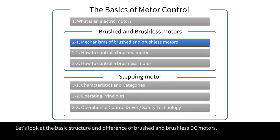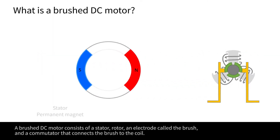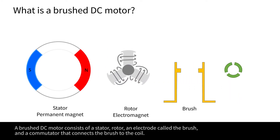Let's look at the basic structure and difference of brushed and brushless DC motors. A brushed DC motor consists of a stator, rotor, an electrode called the brush, and a commutator that connects the brush to the coil.